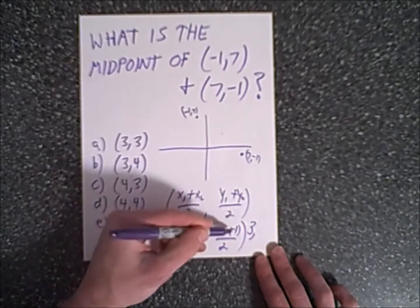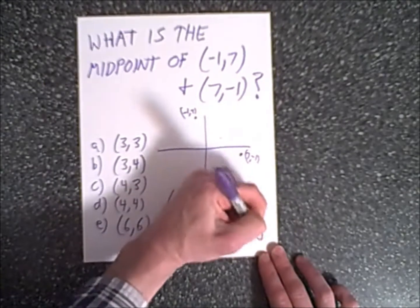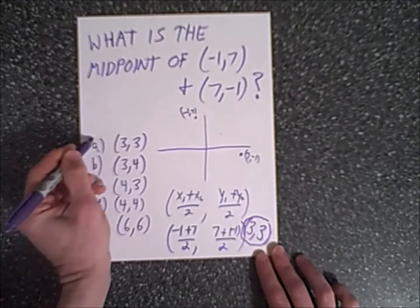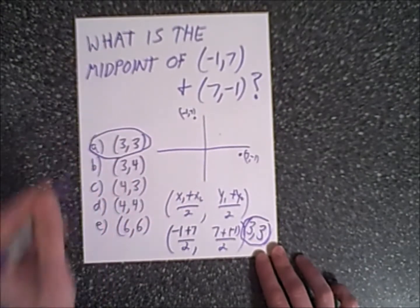Therefore our midpoint would be 6 over 2, which is 3, and 7 minus 1, 6 over 2 is 3, and our answer is A, (3,3).